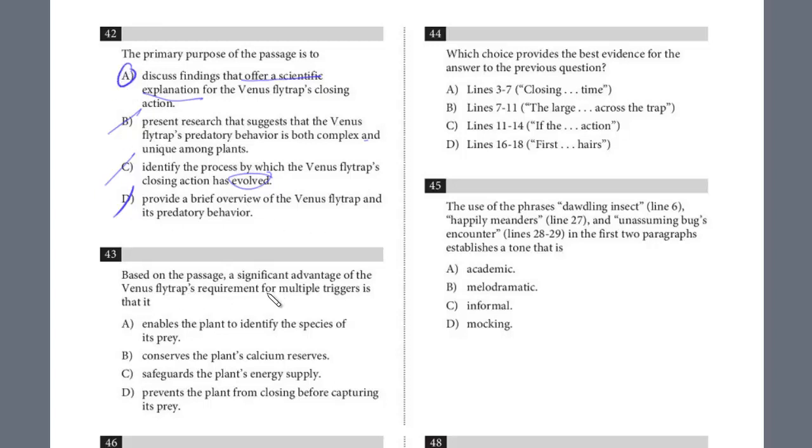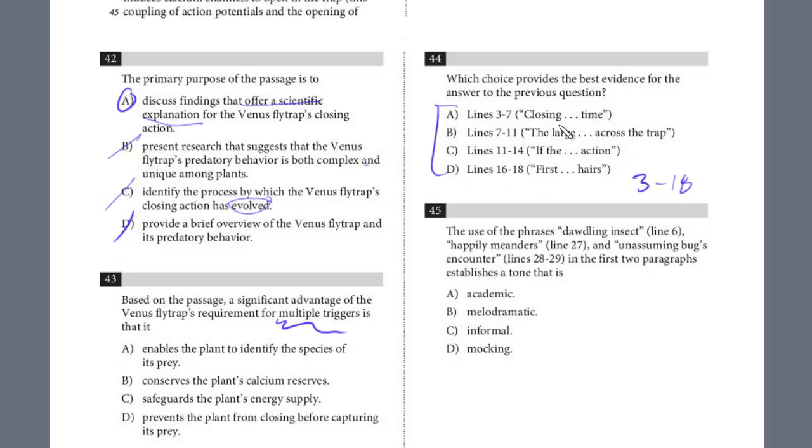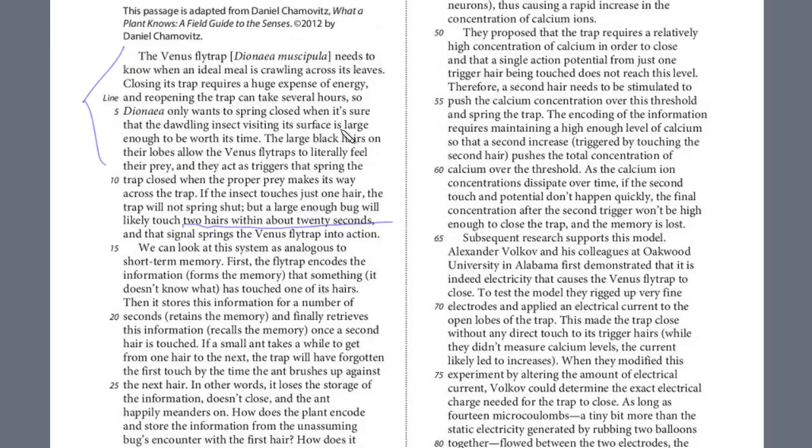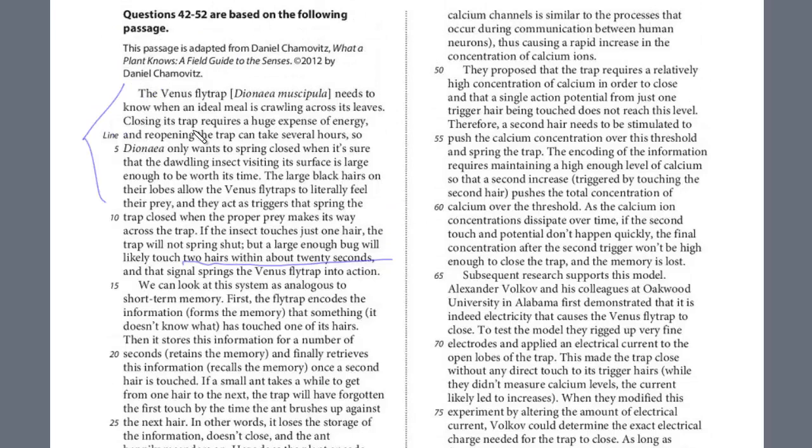Question 43. Based on the passage, a significant advantage of the Venus flytrap's requirement for multiple triggers is what? You can kind of predict this. We know that it doesn't do it indiscriminately. What's the advantage? We know it's between lines 3 and 18. It's a pretty short range. That was in that first paragraph that I read. So let's just take a look between 3 and 18, an advantage of closing the trap. So if we start right at 3, closing its trap requires a huge expense of energy, and reopening the trap can take several hours. So Dionaea only wants to close when it's sure that the dawdling insect visiting the surface is large enough to be worth its time. Right away, we see this is an advantage. It takes such energy, and so it wants to make sure the prey is large enough.